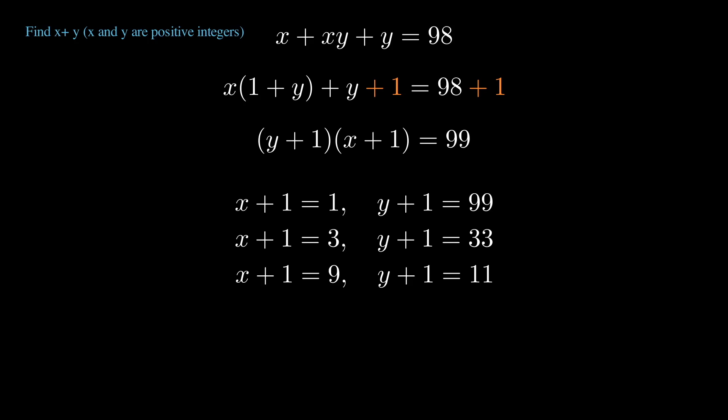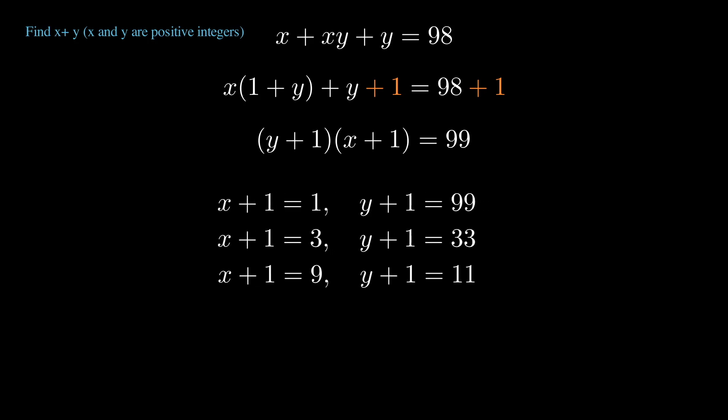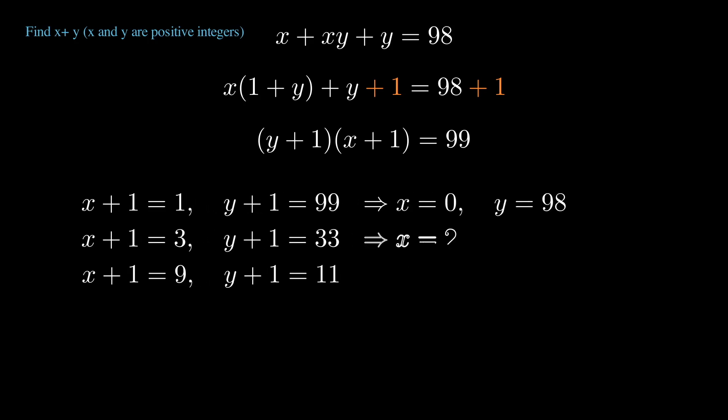All of those would equal 99, giving us a few linear equations which aren't too bad to solve just by subtracting one. Be careful here, we were restricting ourselves to just positive integers. So let's get rid of zero here. That will eliminate this solution set.